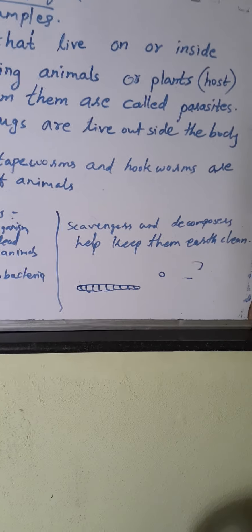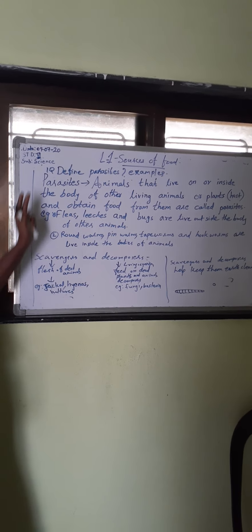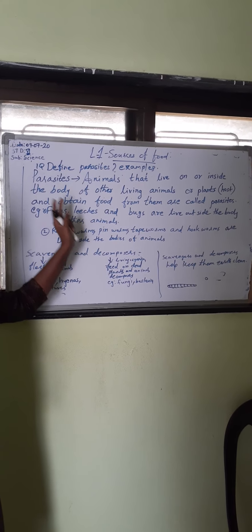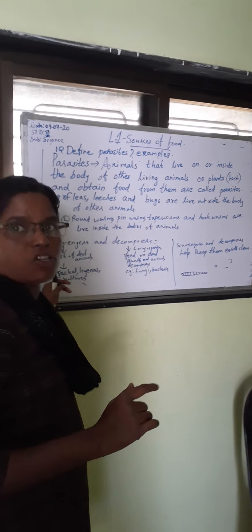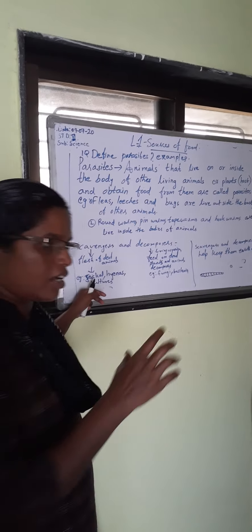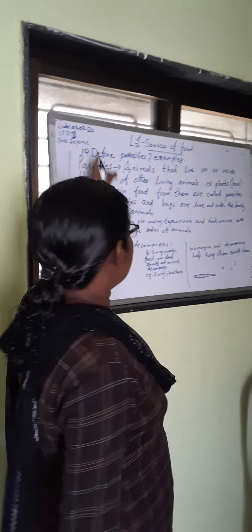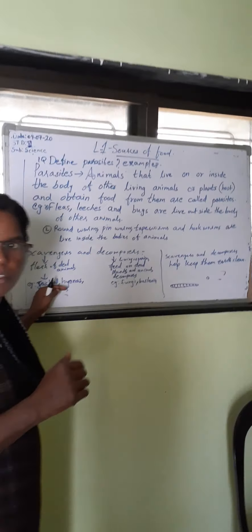All of you understand this lesson? Okay, so this is writing. Your test book — read your test book also. Otherwise, write this answer in your CW book and HW book also. Okay, all of you understand? Thank you, children.